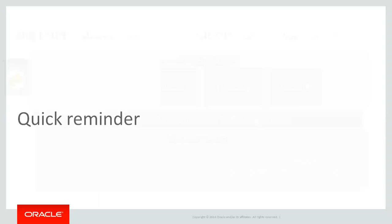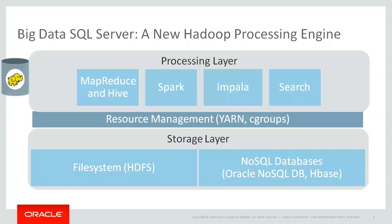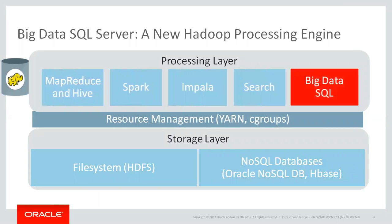Let me do a quick reminder of what Big Data SQL is. Big Data SQL is a processing engine which reads data on HDFS, HBase, Oracle NoSQL, or other NoSQL databases — in other words, from the storage layer. Like Spark, MapReduce, or Impala, we didn't bring something new into the storage layer; we just install our process on every data node on every Hadoop node.